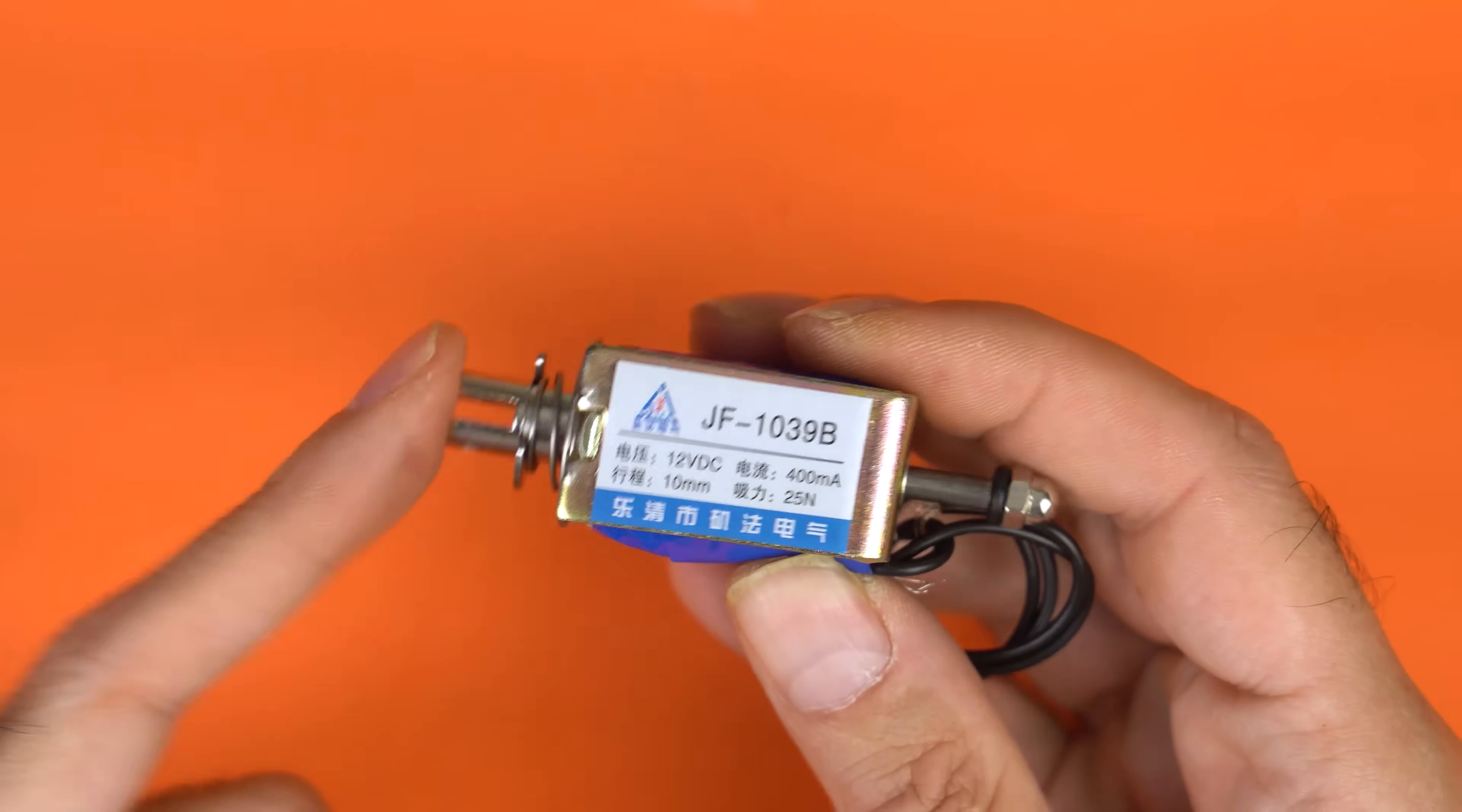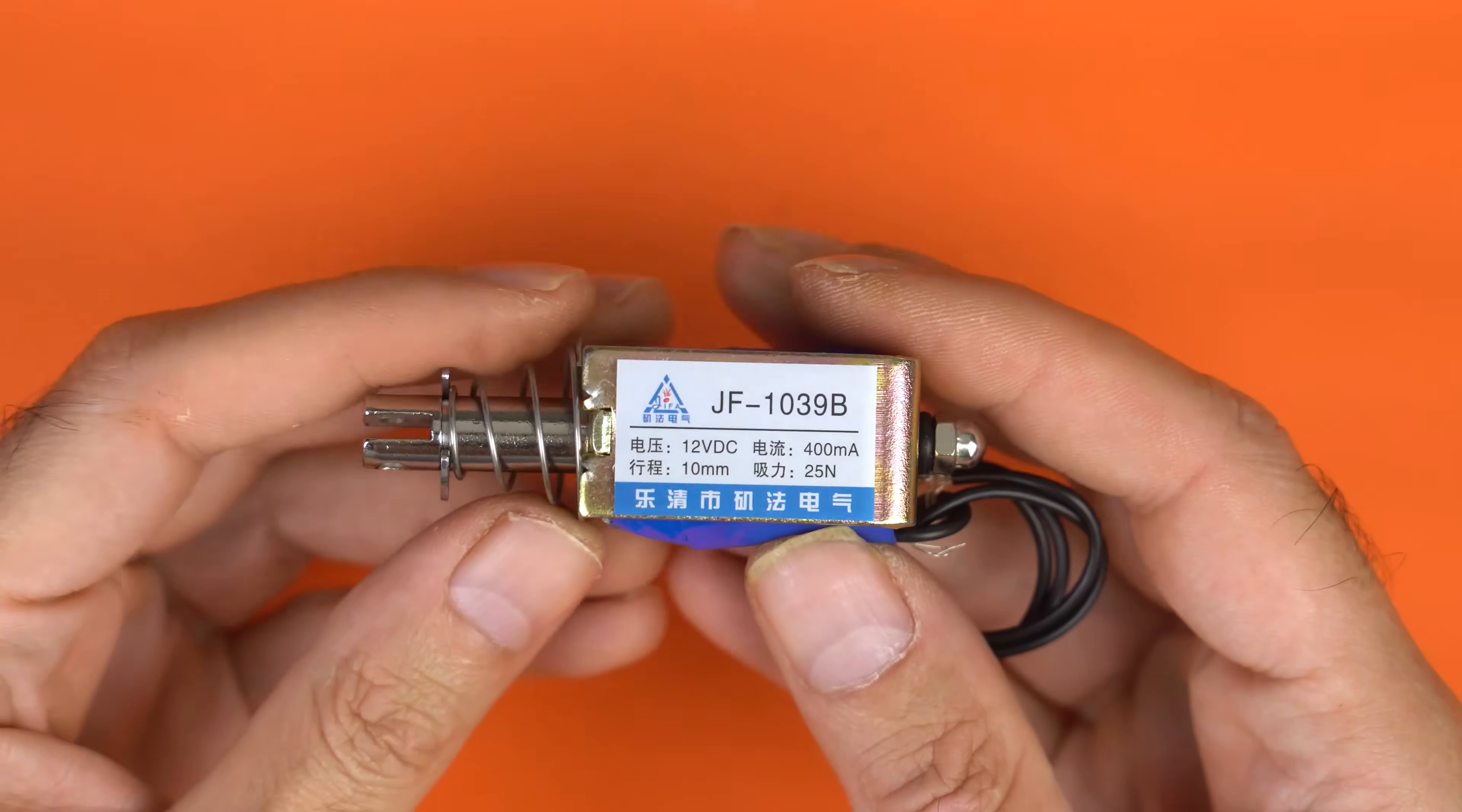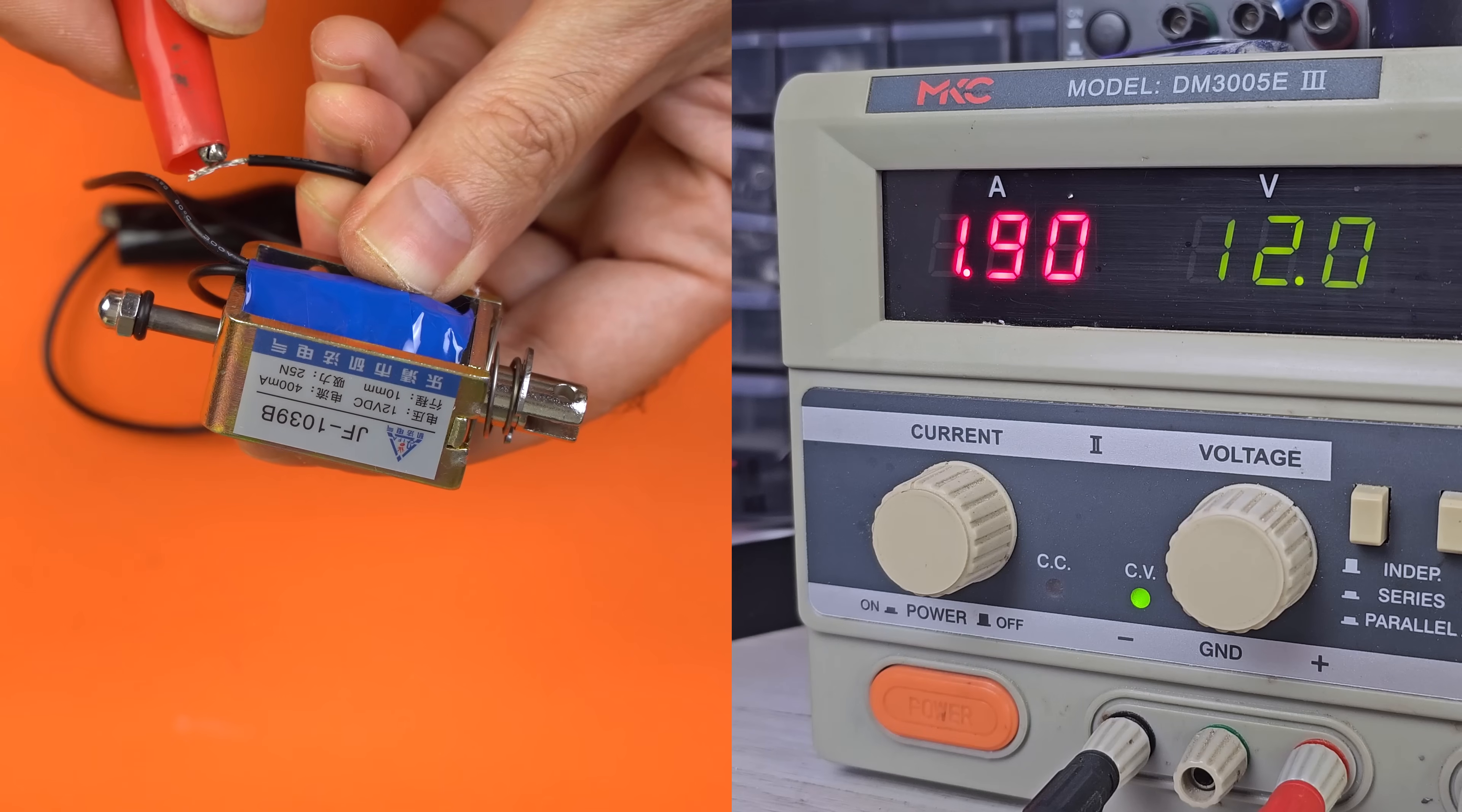On Aliexpress, I found the perfect coil. It's a bit limited in stroke, but it's strong enough to launch our ball. There are two versions: 12V and 24V. This one is the 12V model, complete with a return spring. But there are two problems we need to deal with. At 12V, it doesn't have enough power to launch the ball with real force, and it draws a lot of current.